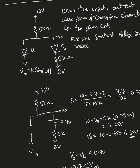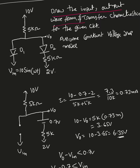Here is the next example. The problem asks to draw the input and output waveform and transfer characteristics for the given circuit, assuming the constant voltage drop model.